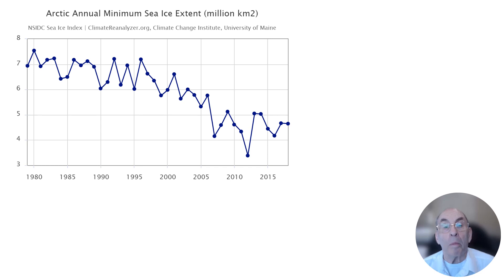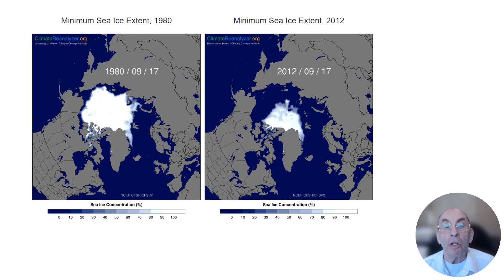The Arctic has been warming at a considerably faster rate than the rest of the planet. One of the reasons for this is the loss of sea ice. As this chart from the Reanalyzer shows, Arctic sea ice has been declining, and the decline has speeded up since the year 2000. When sea ice is lost, less sunlight is reflected from the Arctic Ocean area, which in turn leads to faster warming and even less sea ice. This positive feedback effect is one of the reasons why the Arctic is warming so rapidly compared to much of the rest of the planet.